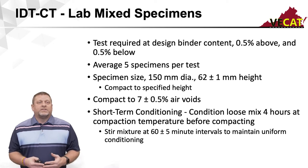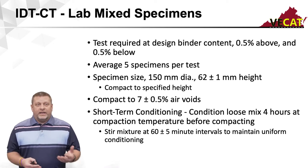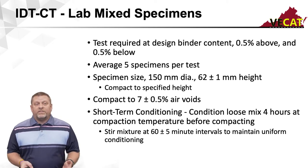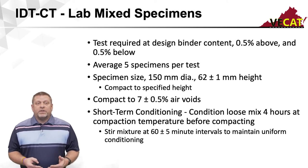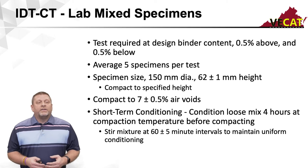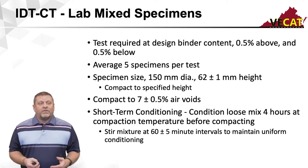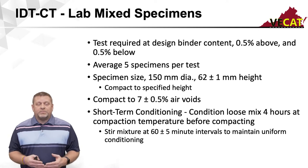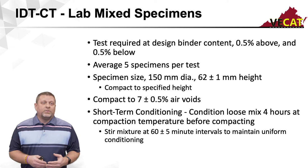The specimen size is 150 millimeters in diameter and 62 millimeters tall. We can compact to specimen height, and we'll talk more about that later. The air void range is 7 plus or minus 0.5% air voids. If you're outside that range, you have to discard the specimen and make a new one.